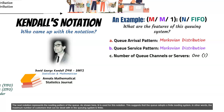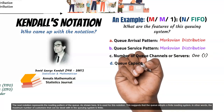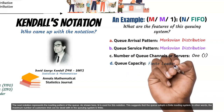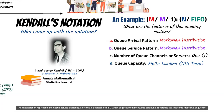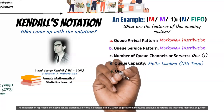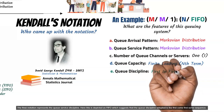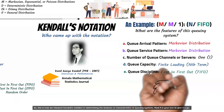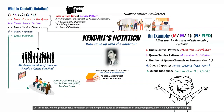The next notation represents the loading pattern of the queue. As shown here, N is used for this notation, suggesting that the queue adopts a finite loading system. In other words, the maximum number of customers that can be dealt with in the queuing system is finite. The final notation represents the queue service discipline. Here this is depicted as FIFO, which suggests that the queue discipline adopted is the first-come-first-serve sequence. This is how we interpret Kendall's notation in determining the features or characteristics of queuing systems.